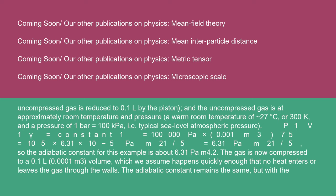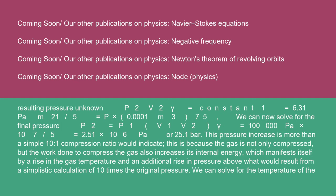P₁V₁^γ = constant₁ = 100,000 Pa × (0.001 m³)^1.4 ≈ 6.31 Pa·m^4.2. So the adiabatic constant for this example is about 6.31 Pa·m^4.2. The gas is now compressed to 0.1 L (0.0001 m³), which we assume happens quickly enough that no heat enters or leaves the gas through the walls. The adiabatic constant remains the same, so we solve for the final pressure: P₂ = P₁(V₁/V₂)^γ = 100,000 Pa × 10^1.4 ≈ 2.51 × 10⁶ Pa, or 25.1 bar.